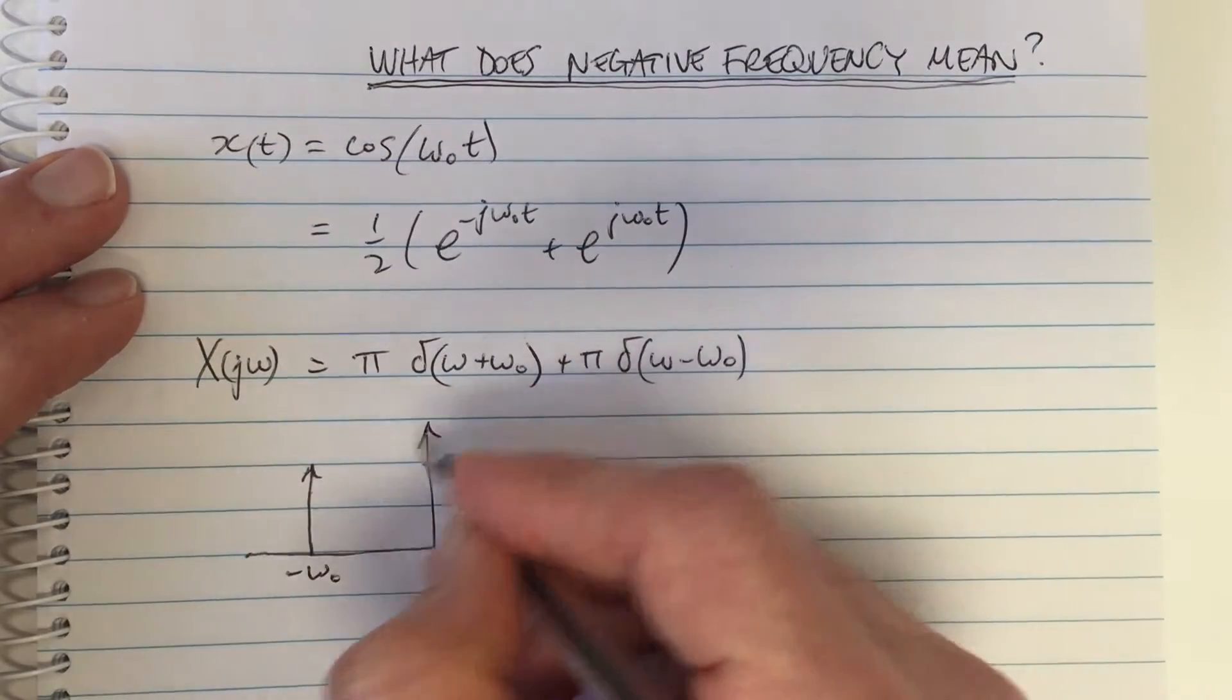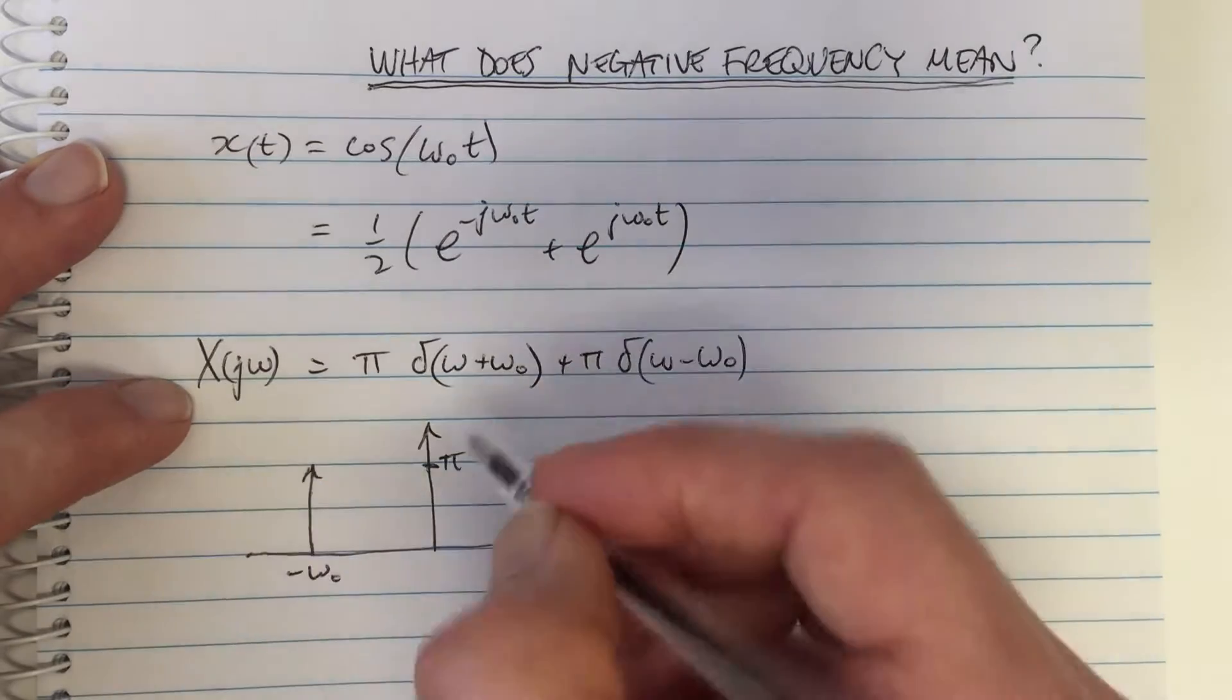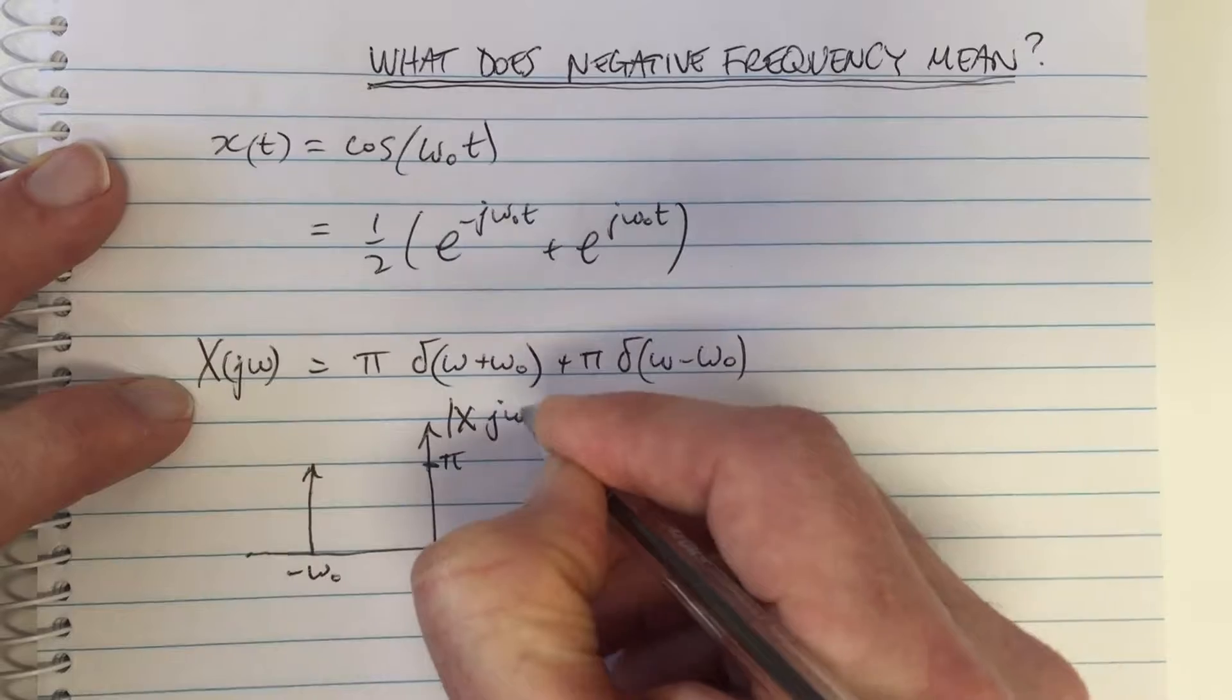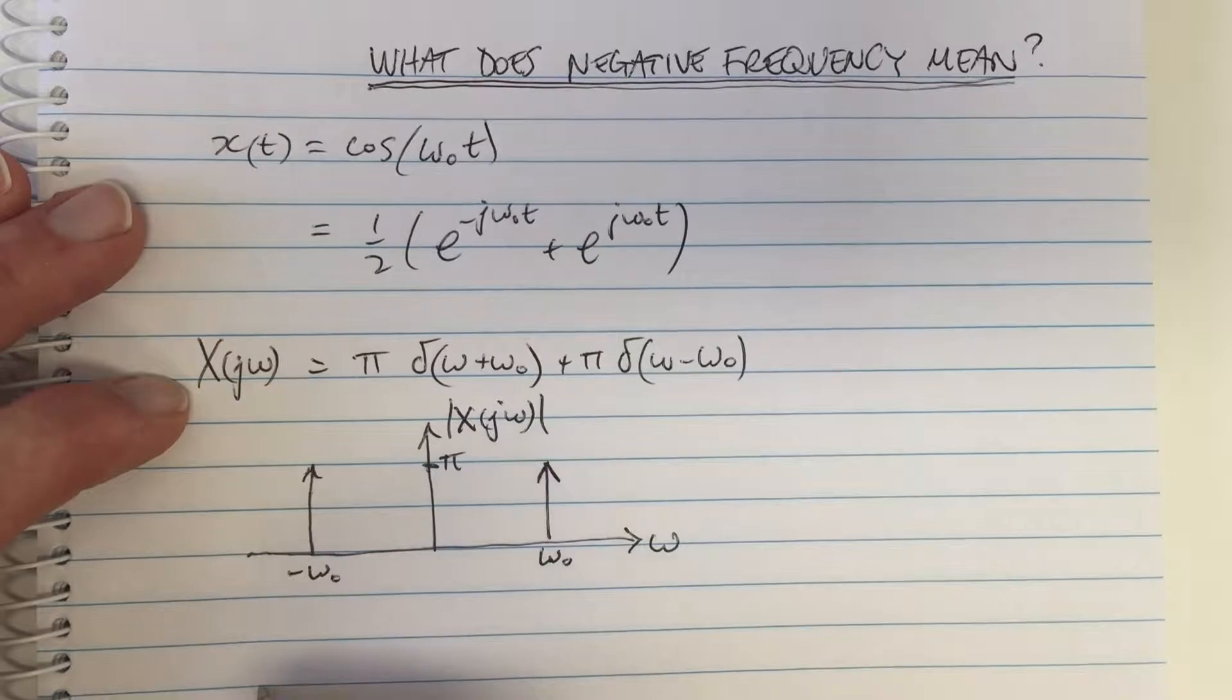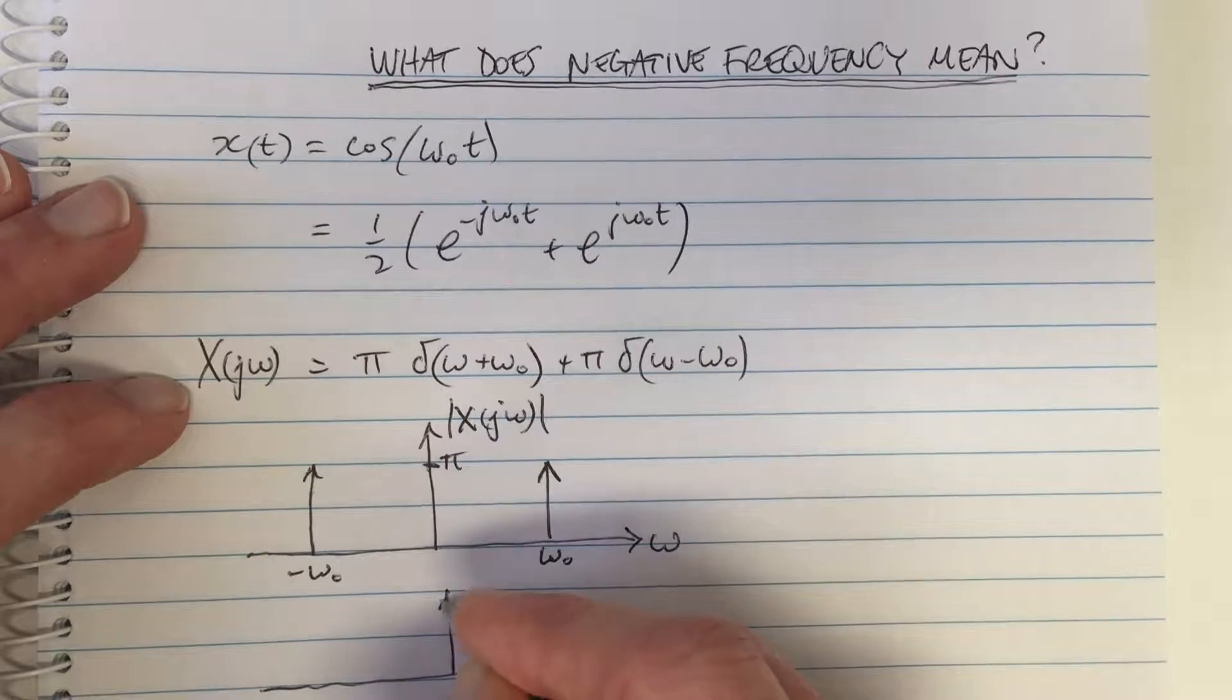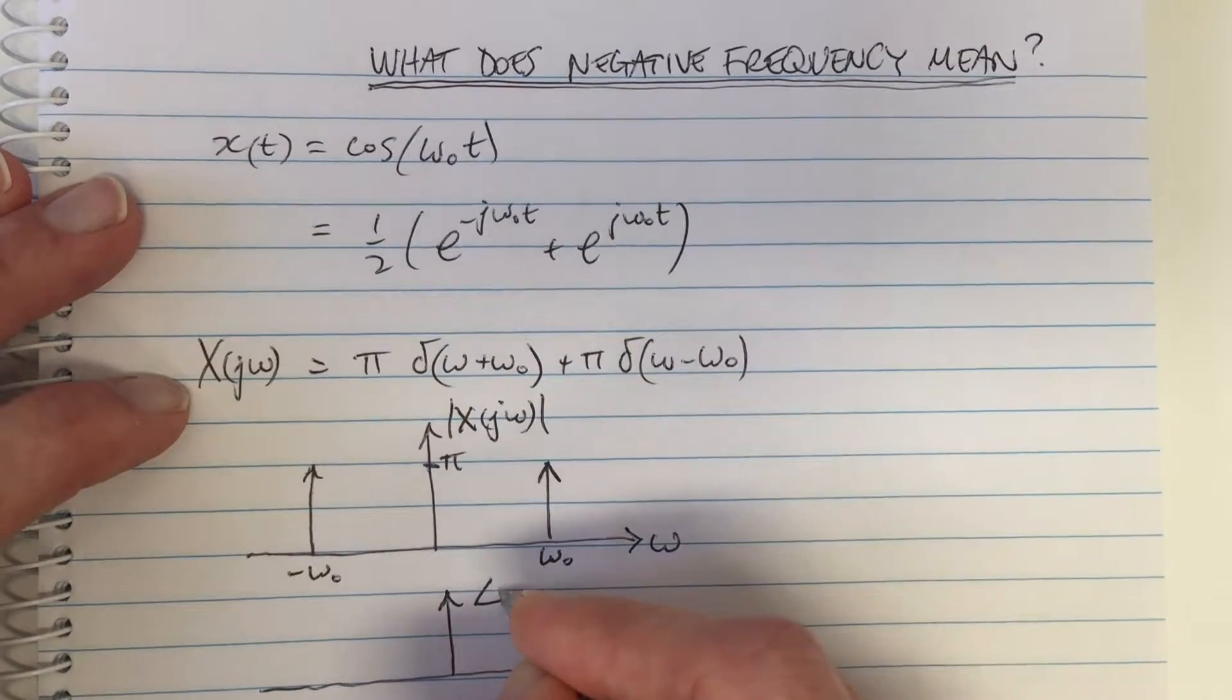It's important to remember that what you've plotted here is not, or in this case it is, but in general it's not the entire function. You have plotted here the magnitude of the Fourier transform. Now in this case the magnitude of the Fourier transform is the entirety, because the phase equals zero. But don't forget, there's also an angle. For any complex number or any complex signal, there's an amplitude and a phase.